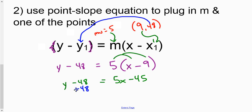Since the y is minusing 48, we can add 48 to that side, and that makes it nothing. And then we can add 48 to this side, and we're left with y equals 5x plus 3.